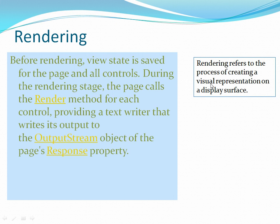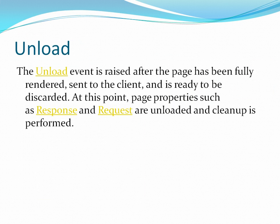Finally, rendering. Rendering refers to the process of creating a visible representation — how the form and the page are going to be displayed. Before rendering, the view state is saved for all pages and controls, meaning whatever values you have put in the controls and whatever the view state of the page is saved. Then a method called render is called for each control, which provides a text writer that writes the output to the page response property. After rendering, if everything is complete, the unload state is called. The unload event is raised after the page has been fully rendered, sent to the client, and is ready to be discarded. At this point, page properties like response and request are unloaded and cleanup is performed.